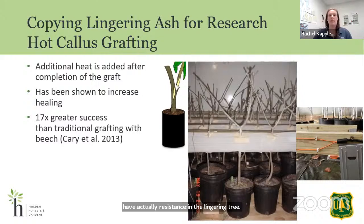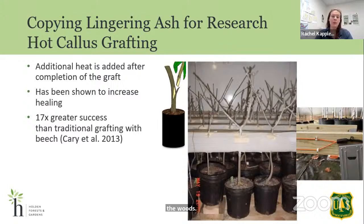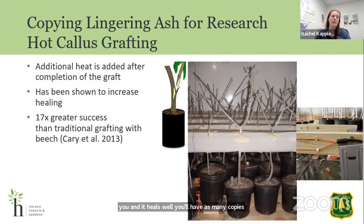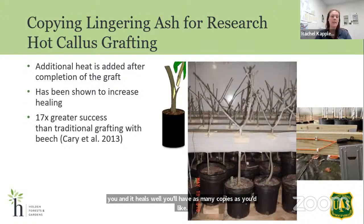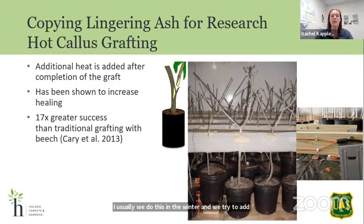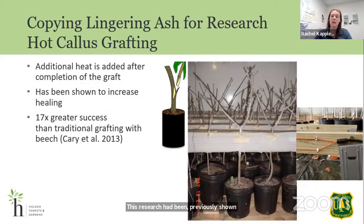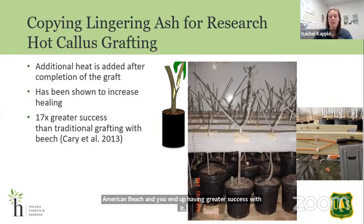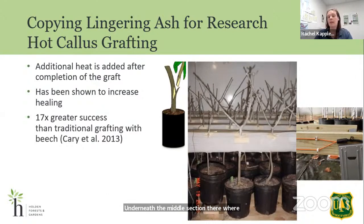We get greenhouse copies via hot callous grafting: you take a twig from the tree in the woods, cut and apply it to a potted ash tree, and if it heals well, you'll have as many copies as you'd like. Usually done in winter, we add heat to increase the healing effort. This method was previously shown to work by the U.S. Forest Service with American beech. Underneath the cut, soil heating cables help keep the area warmer than the rest of the tree, leading to greater success.